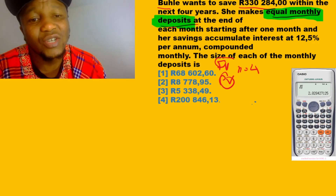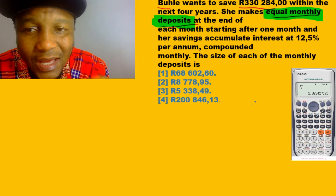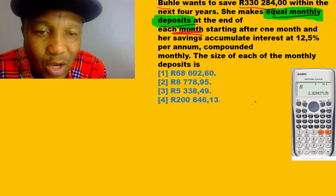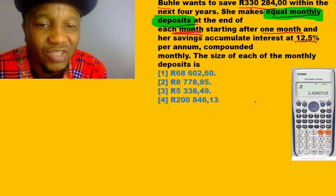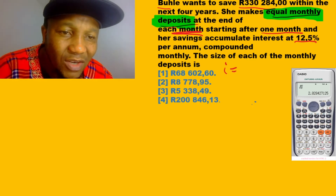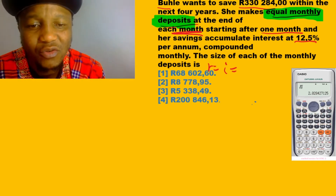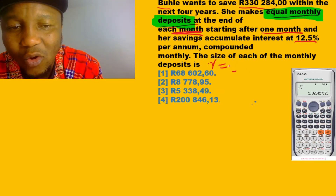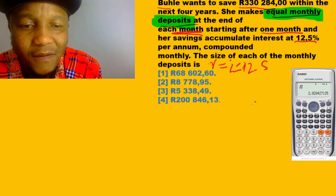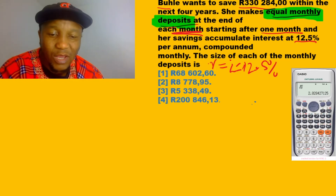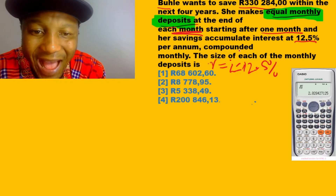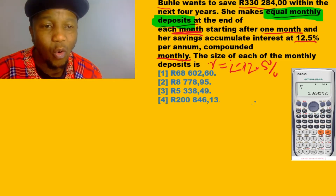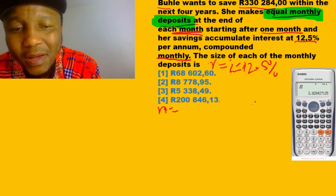They say equal monthly payment at the end of each month, and her savings accumulated. So we have an interest rate — sometimes represented by i, sometimes by r. Here i equals 12.5 percent. They say per annum, compounded monthly. How many months in one year? 12. So m equals 12 because it's compounded monthly.